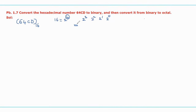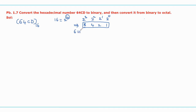The equivalent values of those binary weights are 8, 4, 2, 1. Based on these binary weights, we should write the equivalent binary value for each digit of the hexadecimal number. For the digit 6, its equivalent binary value is 0110.